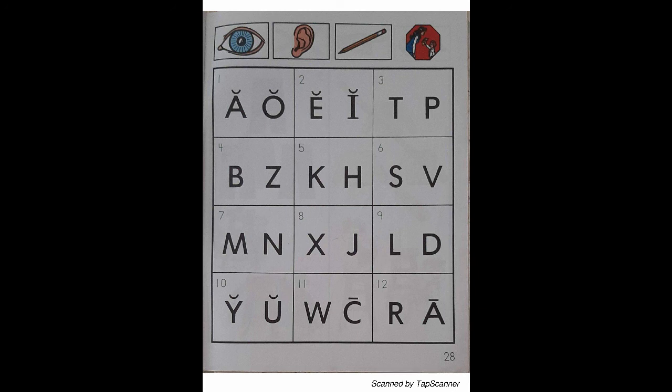Look at the letter in box 10. Listen as I say the sound of the letter: "Y". With your pencil, circle the letter that reads "Y". Look at the letter in box 11. Listen as I say the sound of the letter: "K" — Cockatoo — "K". With your pencil, circle the letter that reads "K".